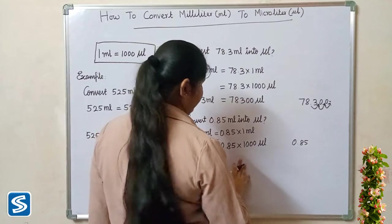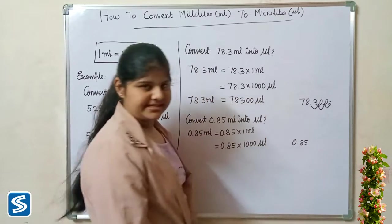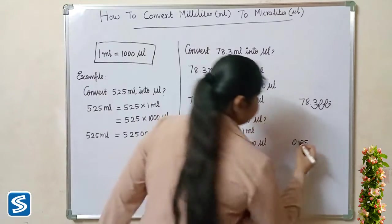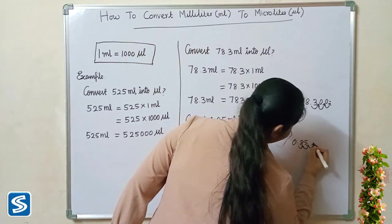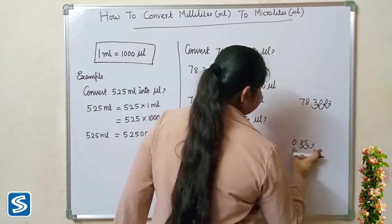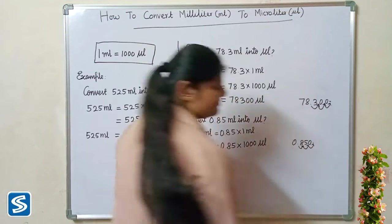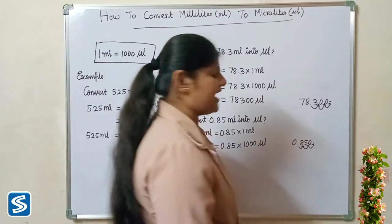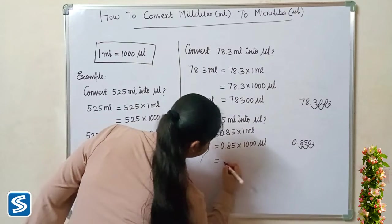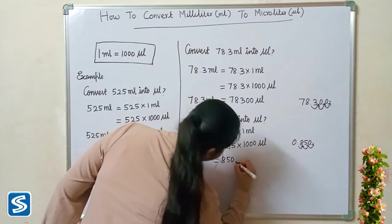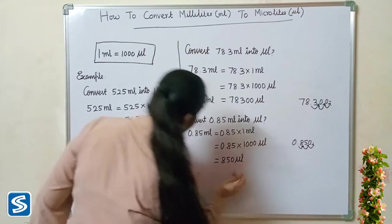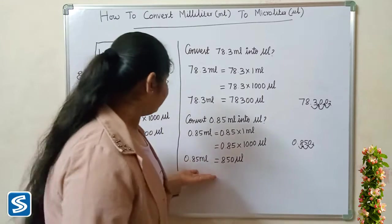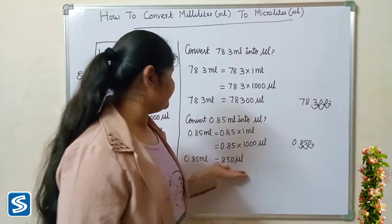The easy way to multiply a decimal number with one thousand is to move the decimal point three places to the right, because one thousand has three zeros — one, two, three. We fill zeros in the empty spaces. So when we multiply zero point eight five with one thousand microliters, our answer will be eight hundred and fifty microliters. So zero point eight five milliliters will be eight hundred and fifty microliters.